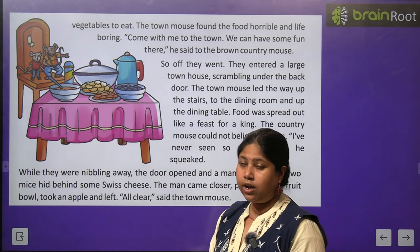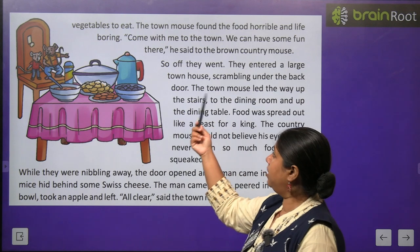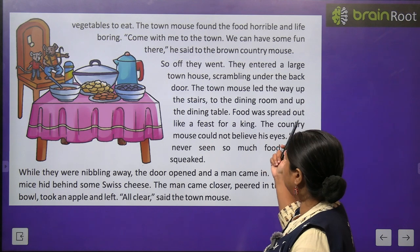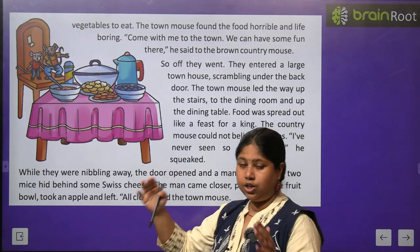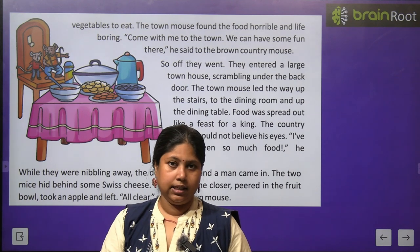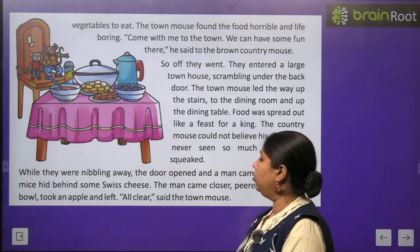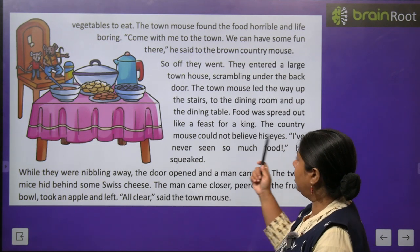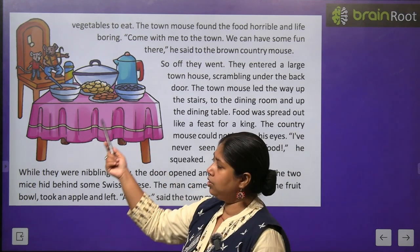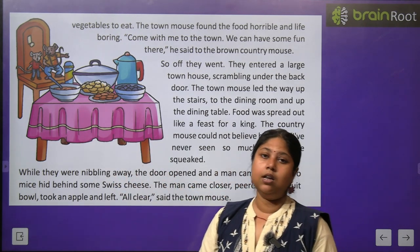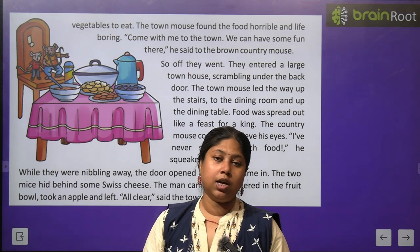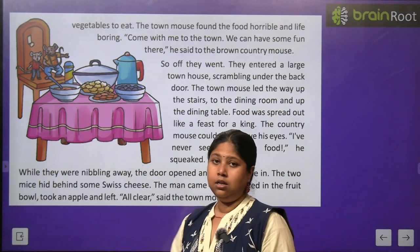Brown mouse bhi ready ho gaya aur dono safar par nikal pade — so off they went. They entered a large town house, scrambling under the back door. Dheere dheere woh sheher mein pahunchne ke baad bade se ghar mein ghuse, peeche wale darwaze ke raaste se. The town mouse led the way up the stairs to the dining room and the dining table — jahan table par bohot saara khana rakha hua tha.